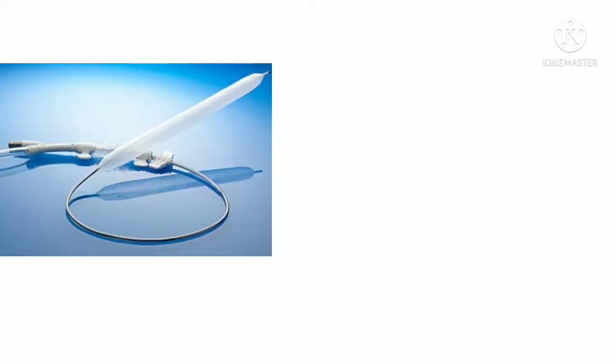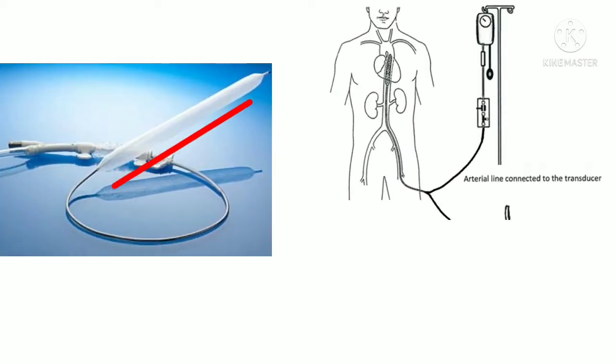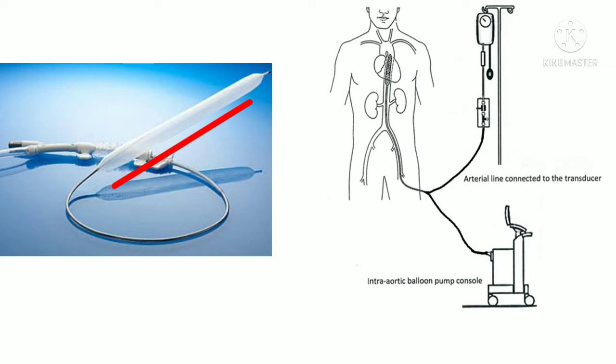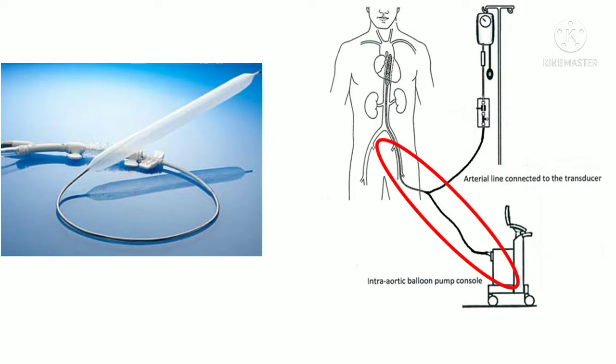The Intra-Aortic Balloon Pump has a thin and flexible tube. One end is attached to the tip of the balloon catheter, and the other end of this tube is attached to a computer console.